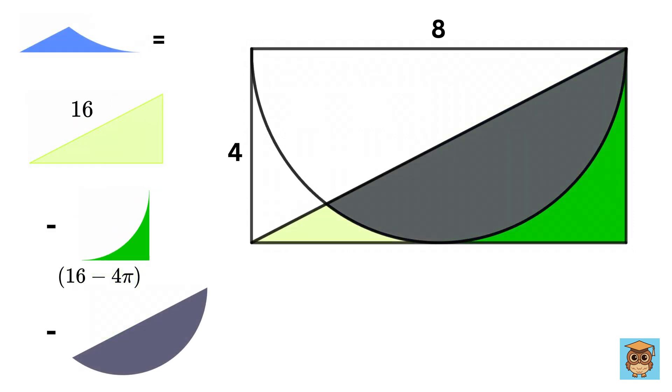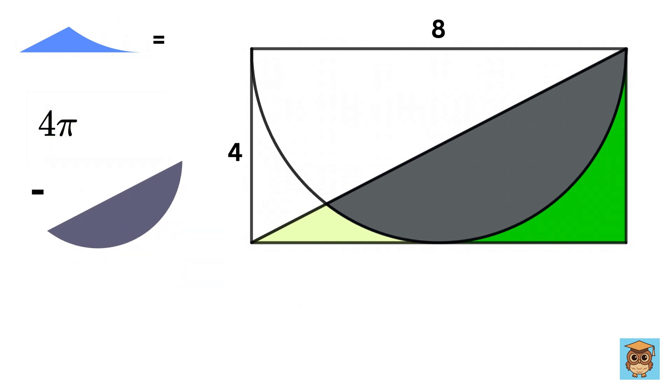Awesome! So, if we subtract both of these, we get 16 minus 16 minus 4π, or simply 4π. Thus, the final answer will be 4π minus this.